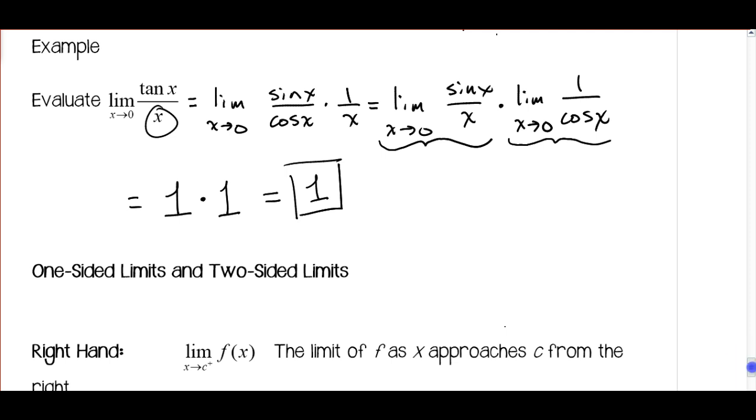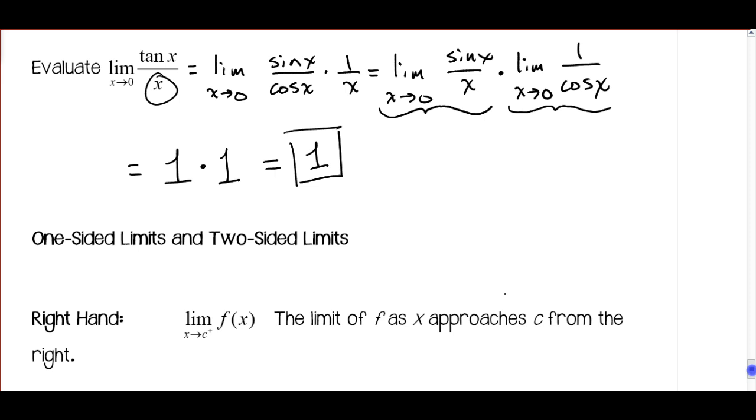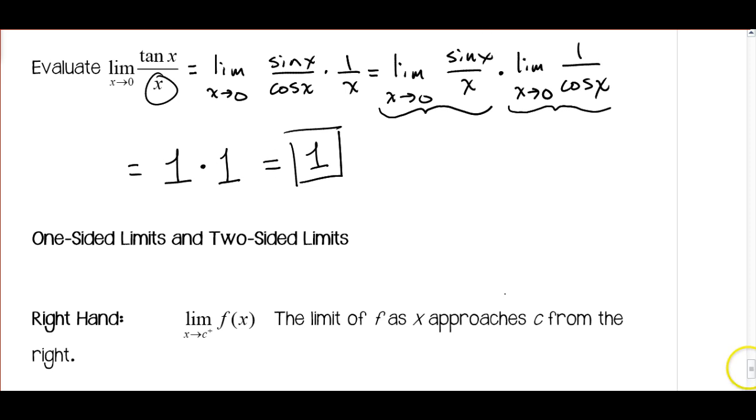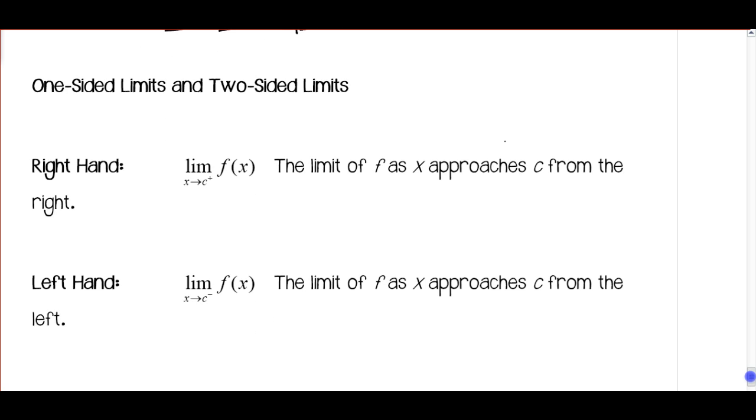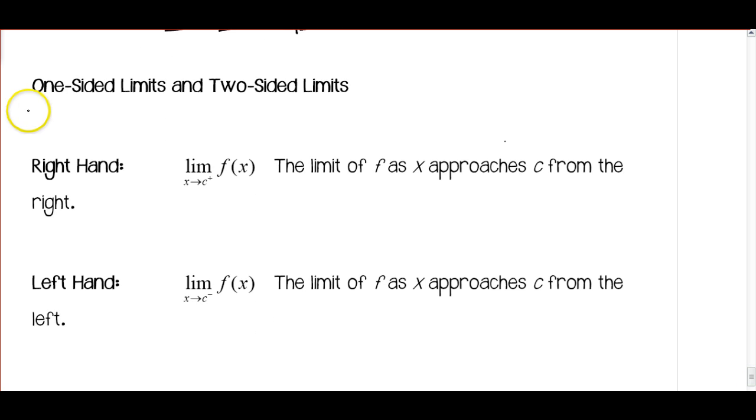So when we talk about limits, we're really talking about approaching a value from the left and the right. That would be a two-sided limit, but sometimes we may want to talk about one-sided limits. So we may want to talk about a right-hand limit. Notice the little plus sign there.